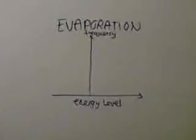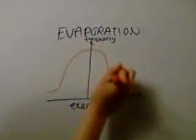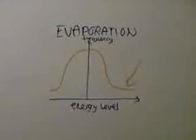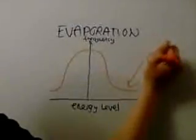In a liquid, particles can have varying amounts of kinetic energy, which is shown by this graph. Particles with enough kinetic energy rise to the surface of the liquid and overcome the force of attraction and form a gas.